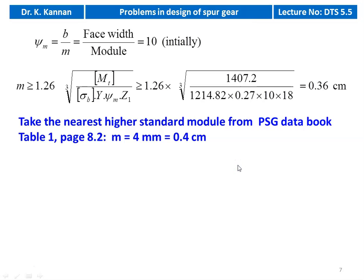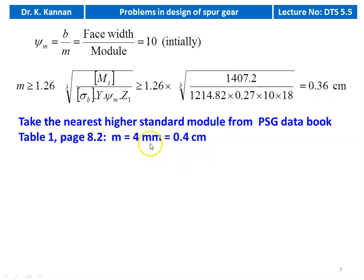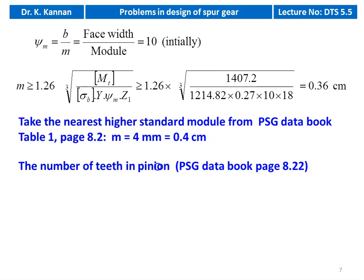We take the next higher standard module from table 1, page 8.2. The calculated value is 0.36 cm. The next higher standard value is 4 mm (0.4 cm). So the standard module is 0.4 cm, and further calculation is based on this standard module.